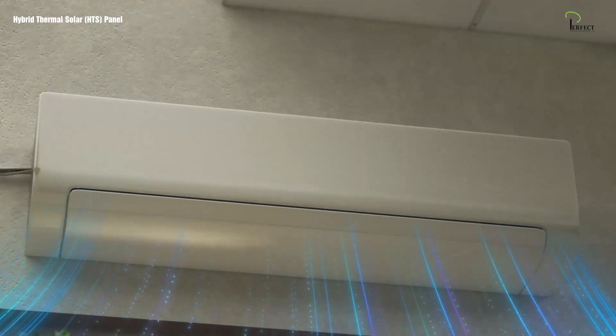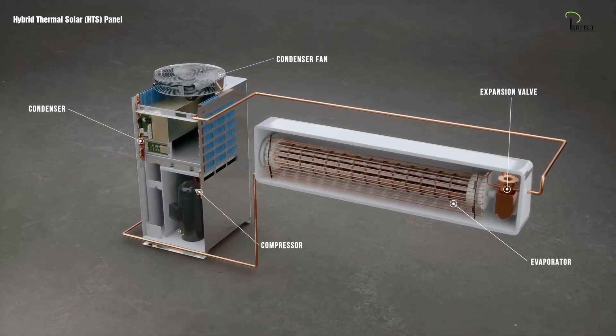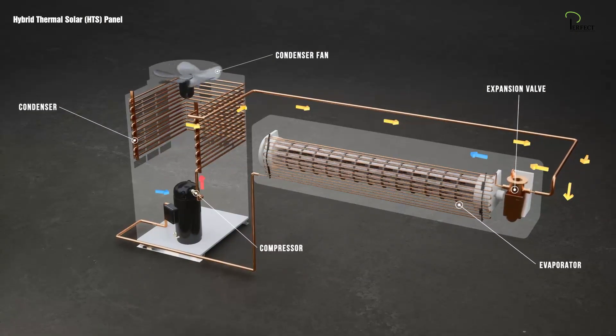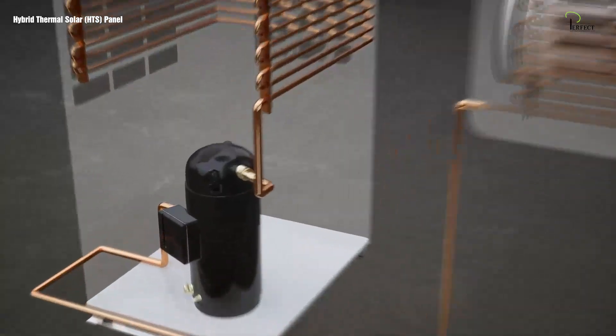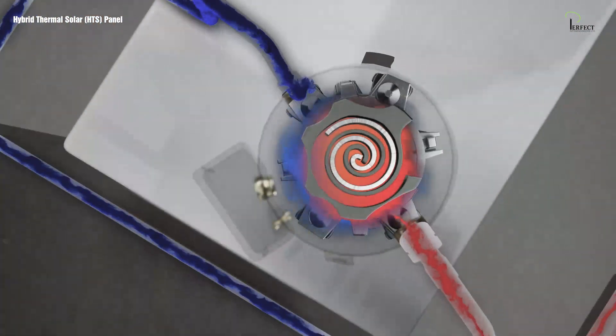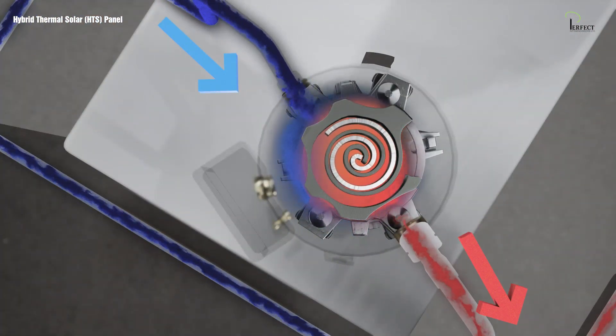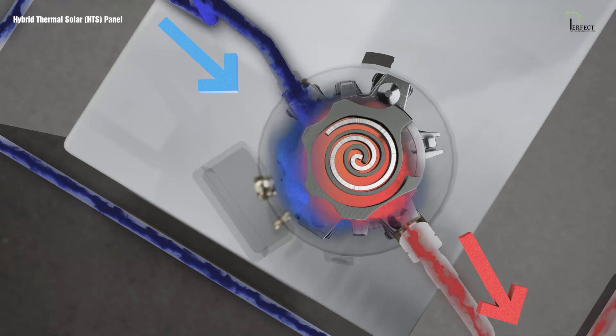To understand that, we first need to understand how a normal air conditioner works. In any normal air conditioning system, the compressor takes up more than 80% of an AC unit's energy consumption. As the name suggests, the compressor compresses the refrigerant gas flowing into it, increasing its pressure and thereby increasing its temperature.